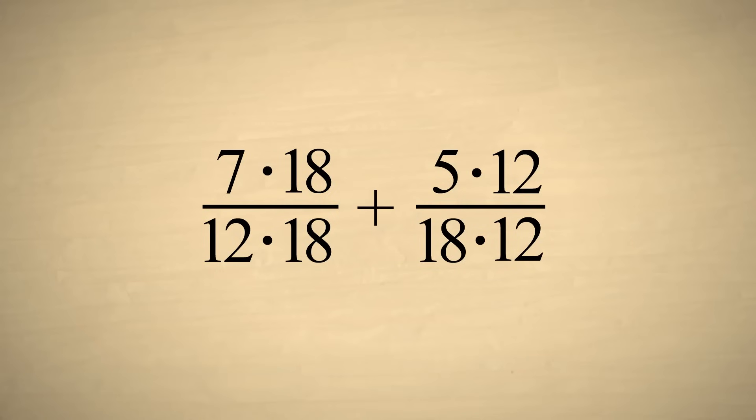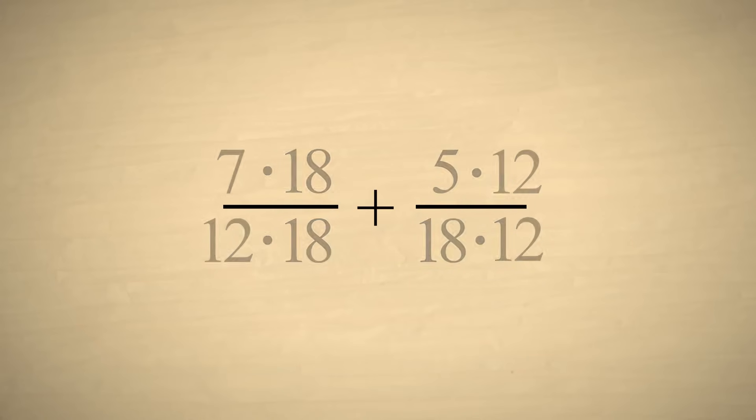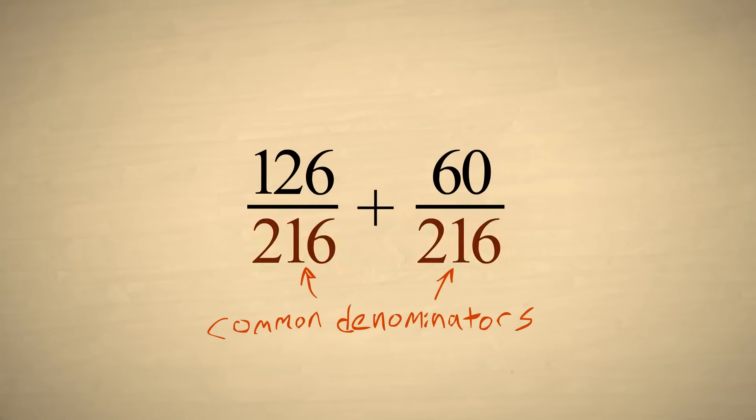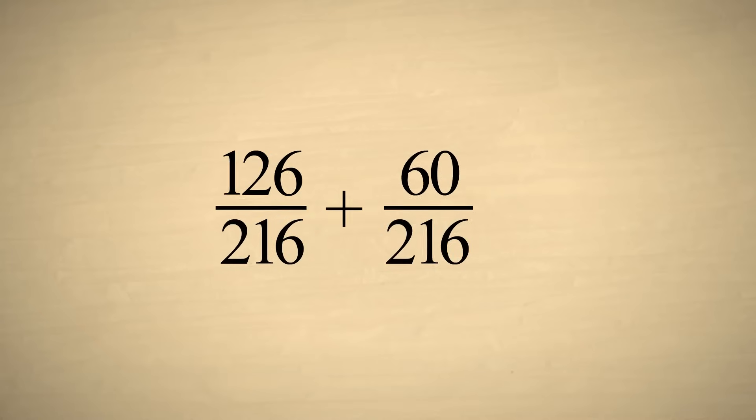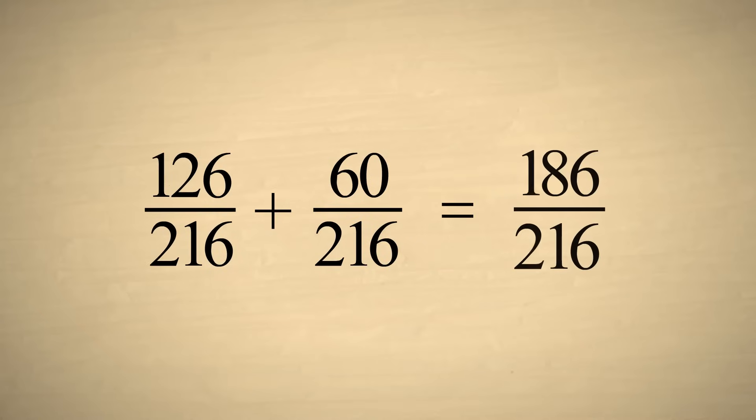Using this technique, multiplying the top and bottom of each fraction by the other fraction's denominator, we end up with a common denominator of two hundred sixteen, and a sum of one hundred eighty-six two-hundred-sixteenths.